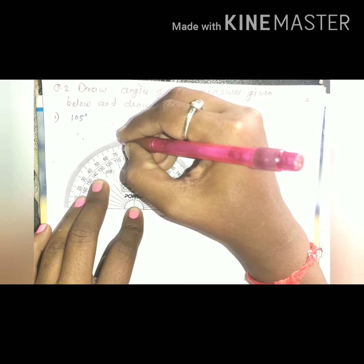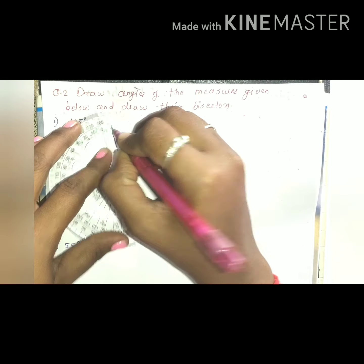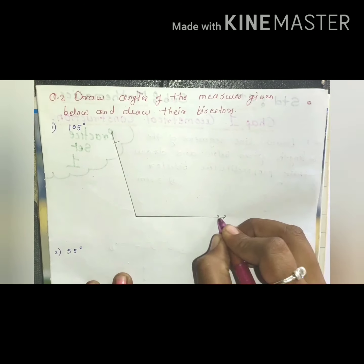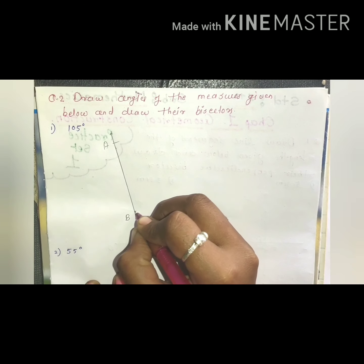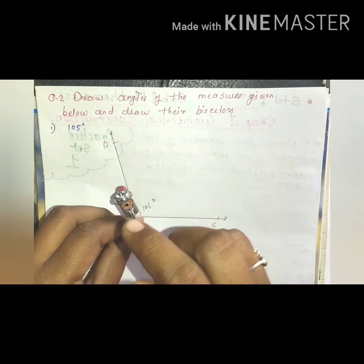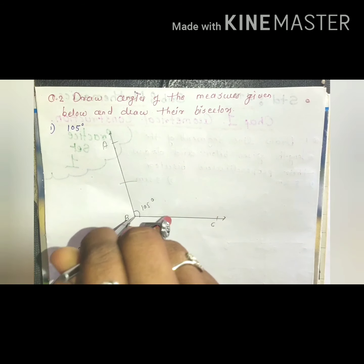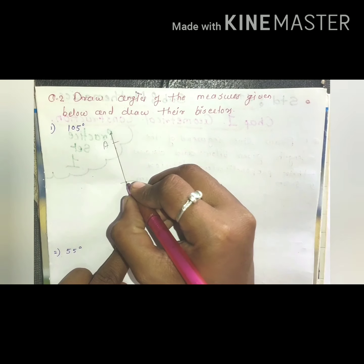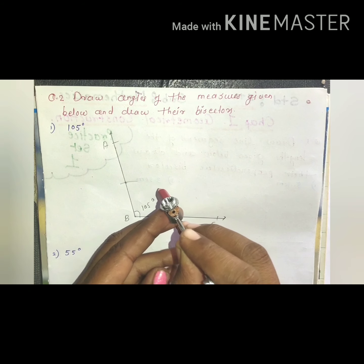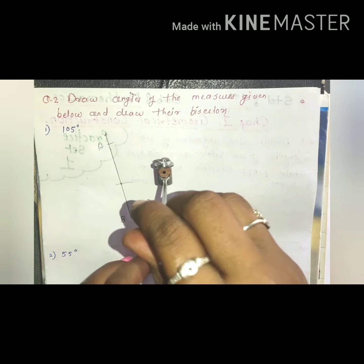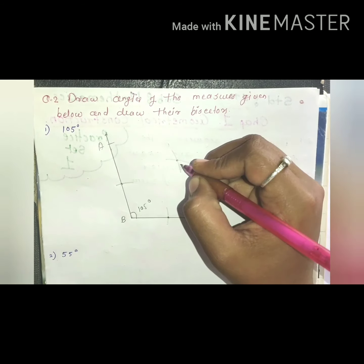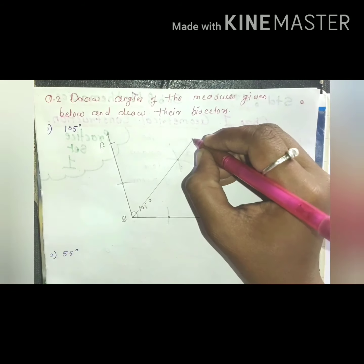The first length given is 5.3 cm. First, make a line segment of length 5.3 cm and name it AB. To draw the perpendicular bisector, as we learned in previous videos, take more than half the distance and make an arc above and below the line. With the same distance, make another arc above and below. The arcs intersect at two points — join these points of intersection to get the perpendicular bisector of line segment AB.